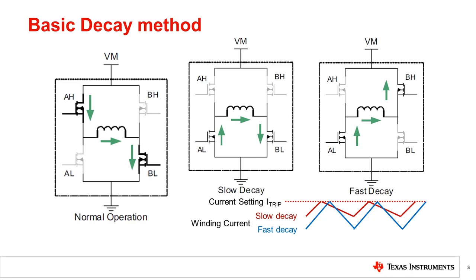In slow decay mode during the drive off time, the recirculation current is allowed to flow through two conducting FETs of the H-bridge, for example, the two low-side FETs. The coil terminal voltage and the decay rate is limited by RDS(on) of the FETs.